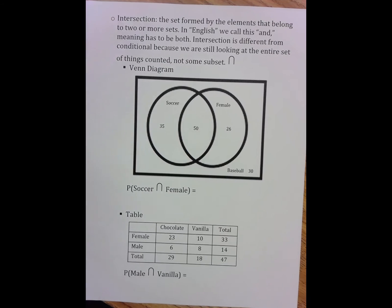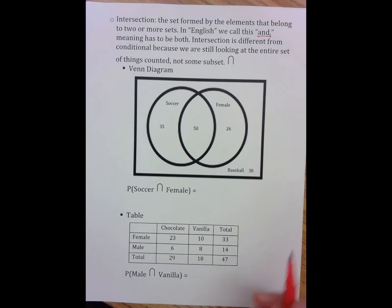Now we're going to go to the other part of these notes, which is the intersection. Now intersection means and. So it has to qualify for both. It can only be the people who are both of those things.